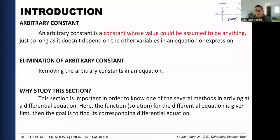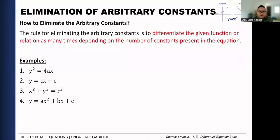For this session we need to know how to eliminate our arbitrary constant. This section is important in order to know one of the several methods in arriving at a differential equation. There are many ways to get the differential equation, and one way is by eliminating the arbitrary constant. The rule for eliminating arbitrary constants is to differentiate the given function depending on how many constants are present in the equation.